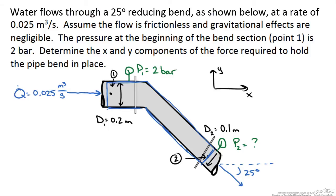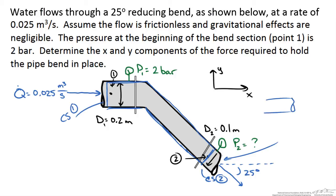We draw our control volume along the pipe to include our points at the surfaces. We have flow entering our control surface at point 1 and exiting at point 2. Keep in mind that we are looking at a piping system that is not open to atmosphere anywhere — it is just a section of pipe. A curly exit symbol indicates that the section keeps going, so we only have one given pressure, that at point 1.